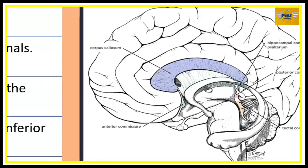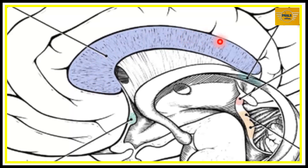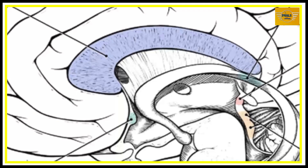We will now consider the anterior commissure. Looking at this image, here is our corpus callosum and its rostral part. Below the rostral part we see the anterior commissure — it is a rounded commissure that lies behind the lamina terminalis and runs transversely in front of the anterior column of the fornix. This commissure interconnects the middle and inferior temporal gyri, and most especially it connects the olfactory regions of the two hemispheres.